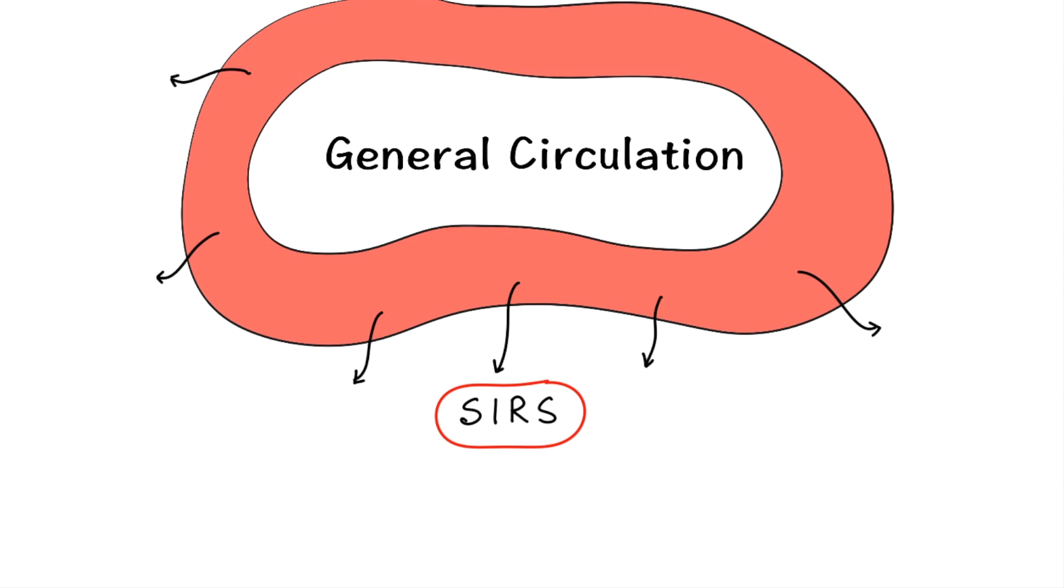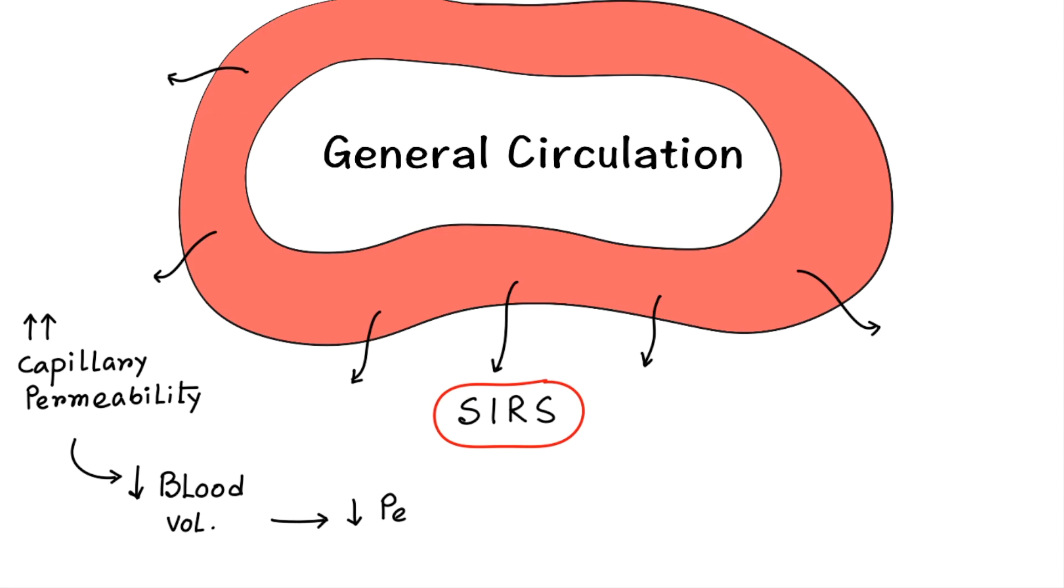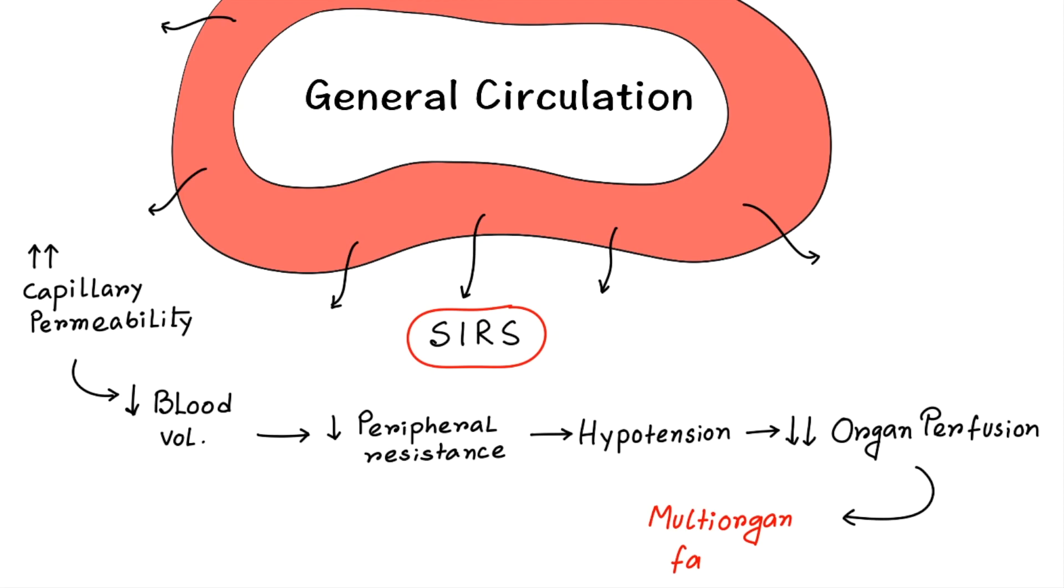Now, sometimes the inflammatory response is so severe that it affects the whole body, which is called systemic inflammatory response syndrome or SIRS, which eventually can lead to septic shock. There will be capillary permeability all over the body. So, the fluid will go out of the capillary to the interstitial space, which leads to decreased blood volume in the blood vessels. Due to vasodilation, there will be decreased peripheral resistance. So, this can lead to hypotension. Due to hypotension, there will be decreased organ perfusion. So, the final outcome will be multiple organ failure. And this is really dangerous.